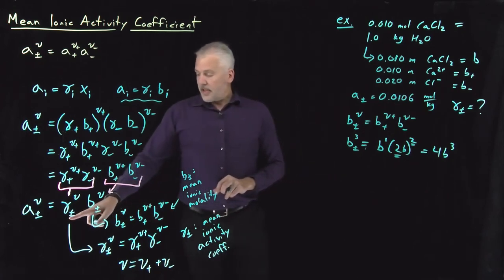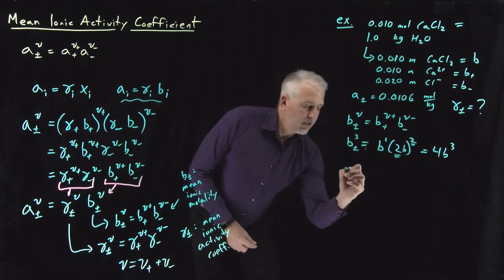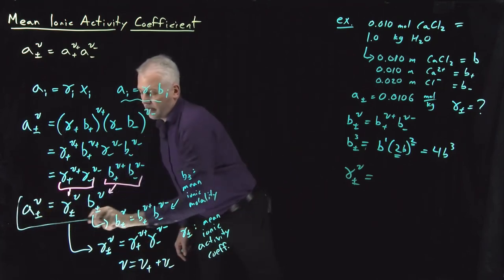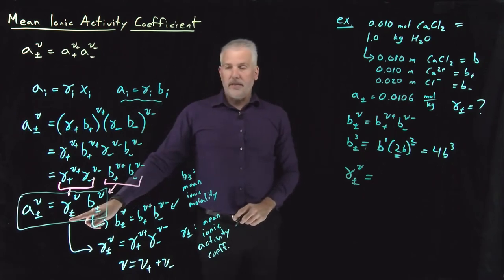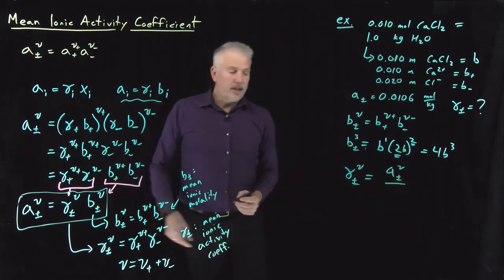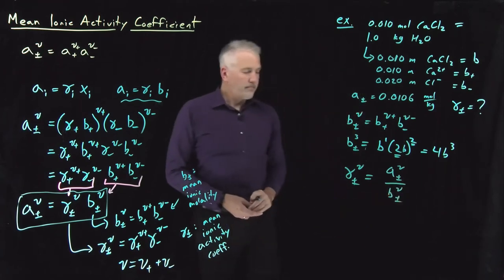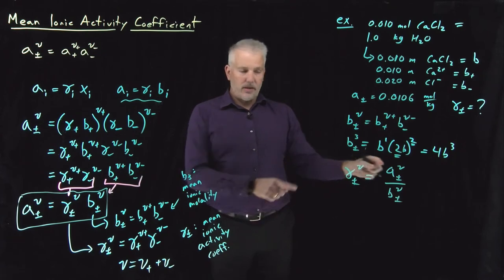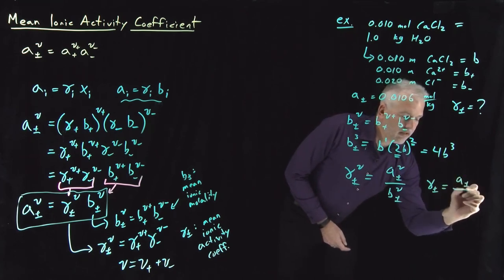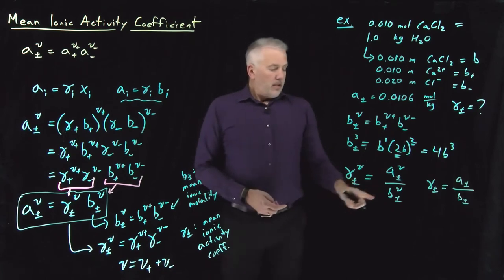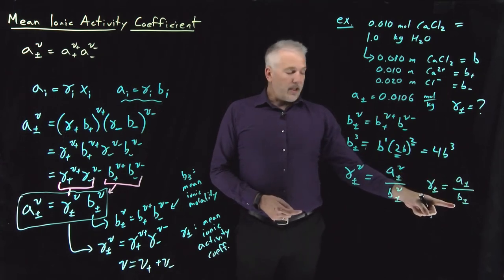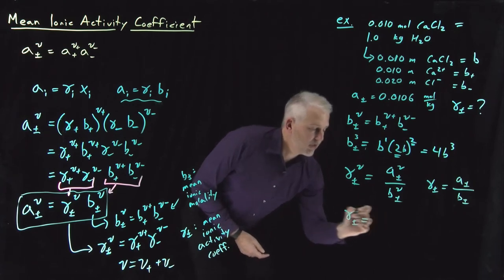Now we're ready to solve for the mean ionic activity coefficient. Rearranging the equation, the mean ionic activity coefficient is the mean ionic activity divided by the mean ionic molality. We can raise all terms to the third power or take the one-third root of the entire equation, giving us: the mean ionic activity coefficient equals the mean ionic activity divided by the mean ionic molality.